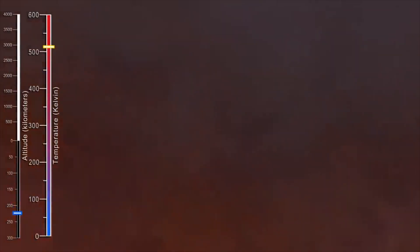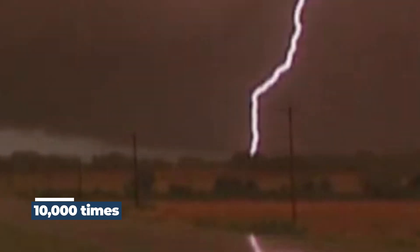According to researchers, lightning production on Jupiter appears to be relatively comparable to lightning formation on Earth, albeit with around 10,000 times more energy.